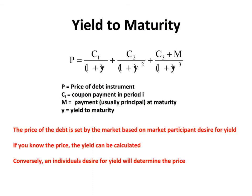We're going to begin with yield to maturity, which we've already used in last week's modules. Given a coupon payment in each period and the payment at maturity of a bond, you can calculate the yield to maturity if you know the price of the bond. The yield to maturity will cause the price of the bond to equal the discounted cash flows of that bond.